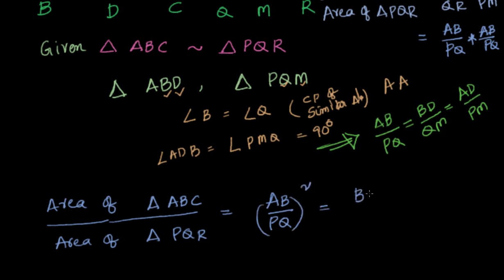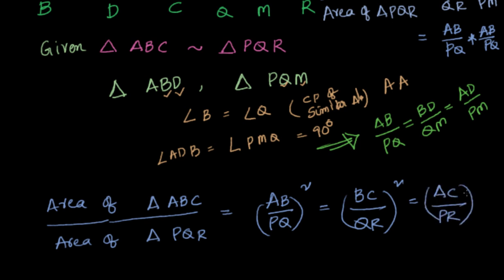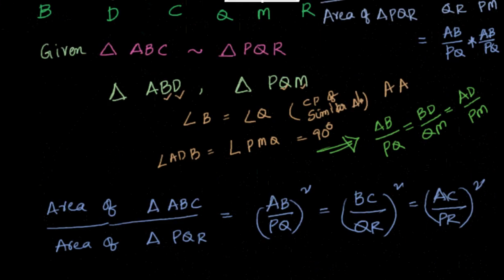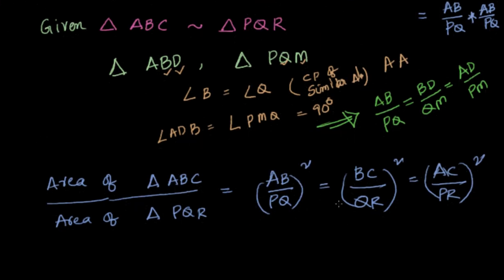This gives us the important conclusion that the ratio of areas — area of triangle ABC by area of triangle PQR — is nothing but equal to BC by QR whole square, which is nothing but equal to AC divided by PR whole square, and also equal to AD by PM whole square. By this we know that if the sides are in a given ratio, then the areas are in the square of that ratio.